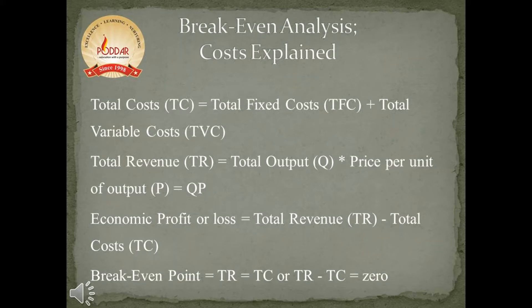Let us now look at the different types of costs in break-even analysis. Total cost is treated as total fixed cost plus total variable cost. Total revenue is calculated as total output (represented by Q) multiplied by price per unit of output (P). Economic profit or loss is calculated as total revenue minus total cost.